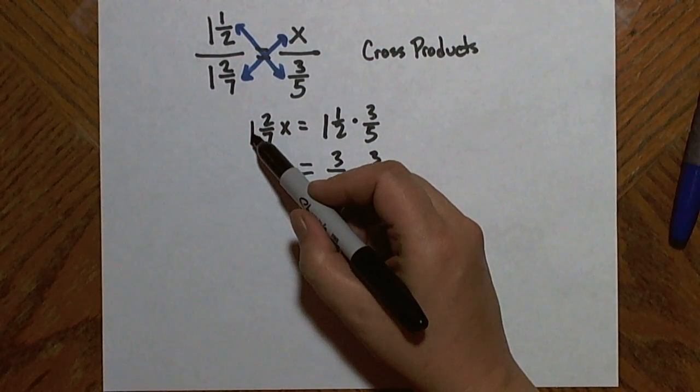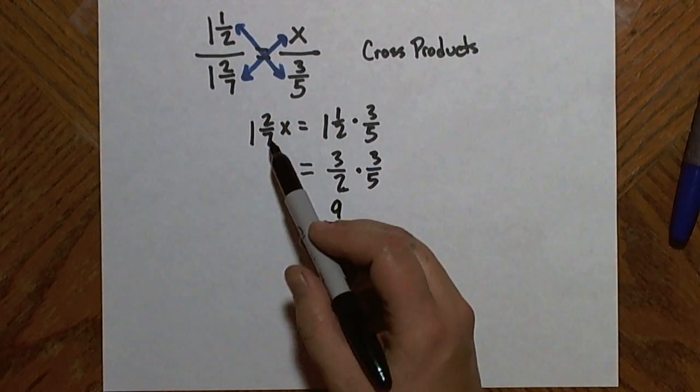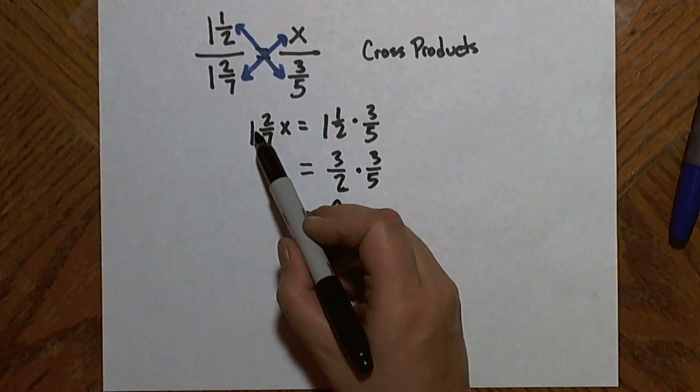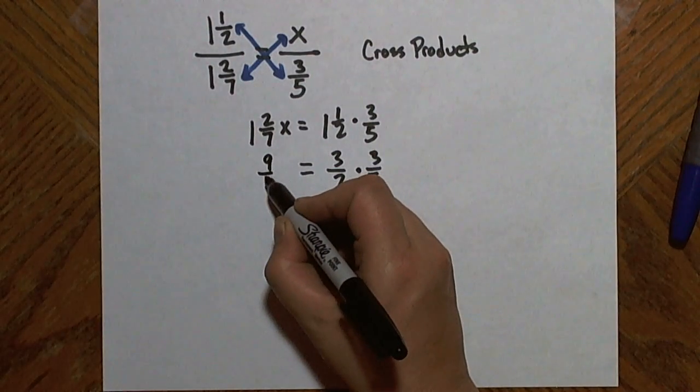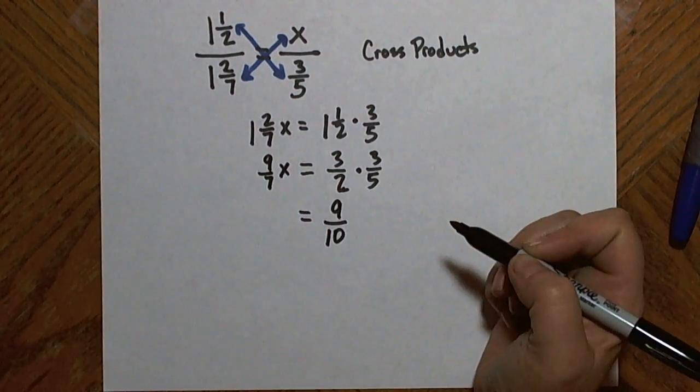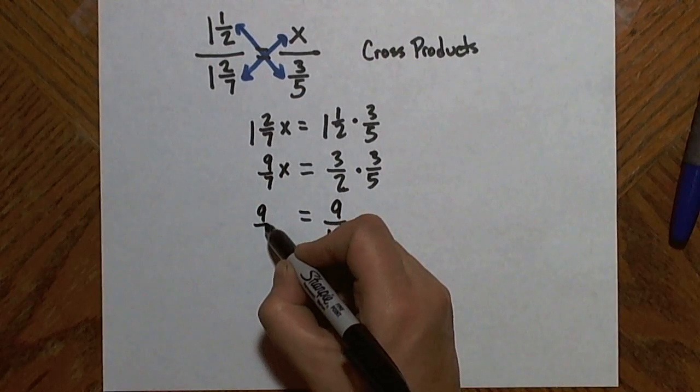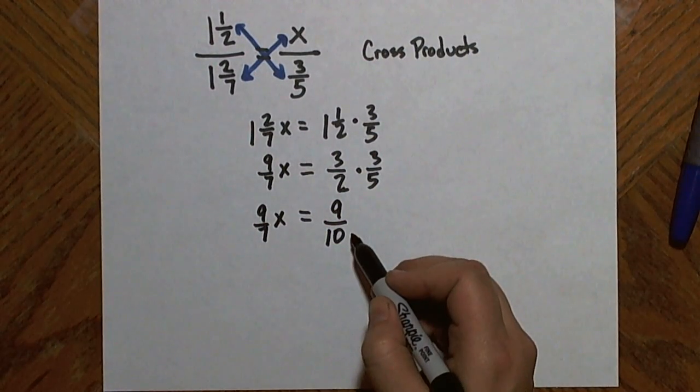On the left hand side, I have a mixed number times x. I will go ahead and make that into an improper fraction. One times seven is seven plus two is nine. So now I have nine sevenths x. On this side, I'm just going to bring that down. Nine sevenths x equals nine tenths.